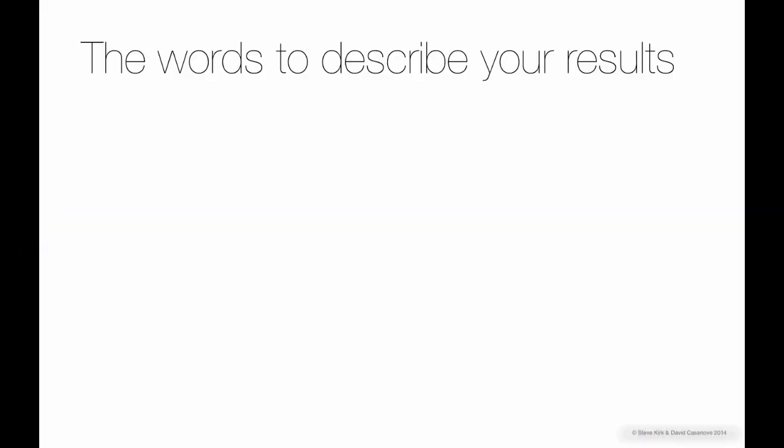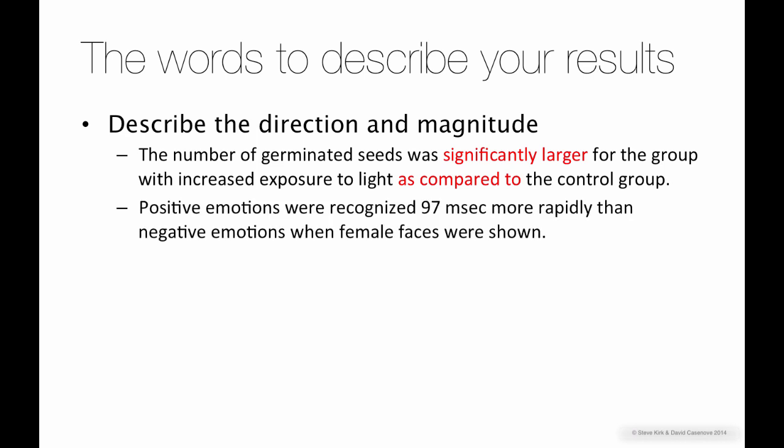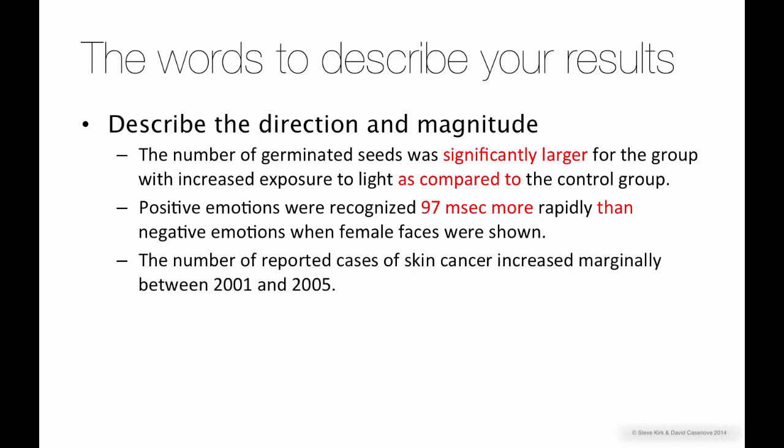In the results section, you have to explain the trends and differences in your data. You'll need to explain both which direction the difference or change is and how big it is. In this example, larger explains the difference and significantly explains how big it is. In this one, 97 milliseconds is the amount and more is the direction of the difference.